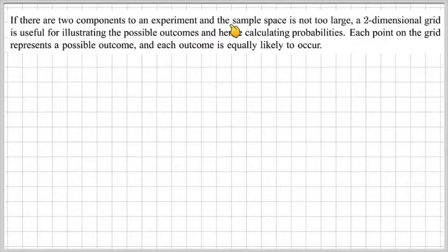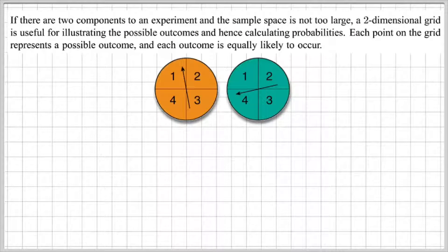If there are two components to an experiment and the sample space is not too large, like two spinners with four sections each, a two-dimensional grid is useful for illustrating the possible outcomes and hence calculating probabilities. Each point on the grid represents a possible outcome and each outcome is equally likely to occur.